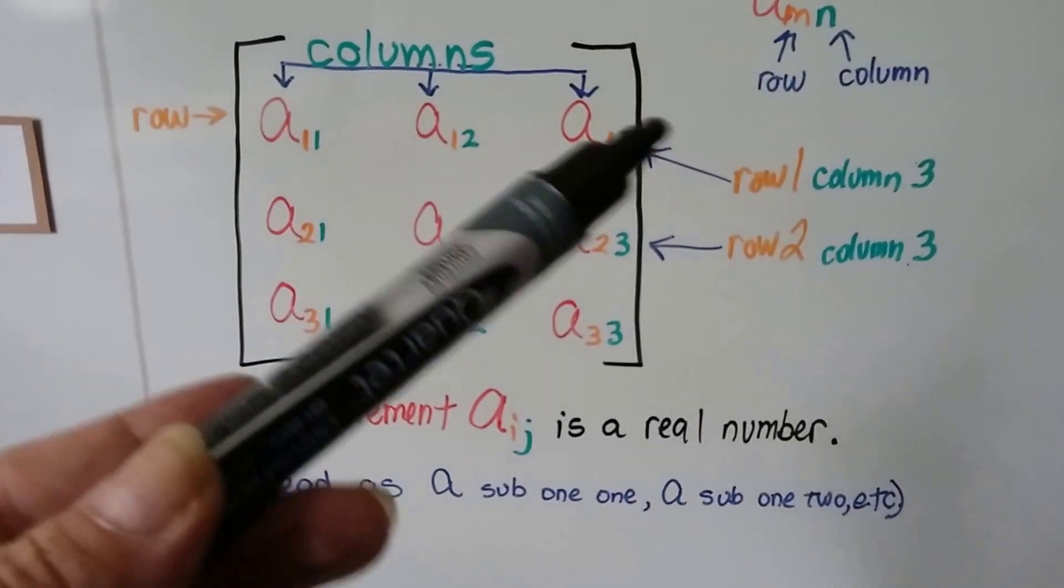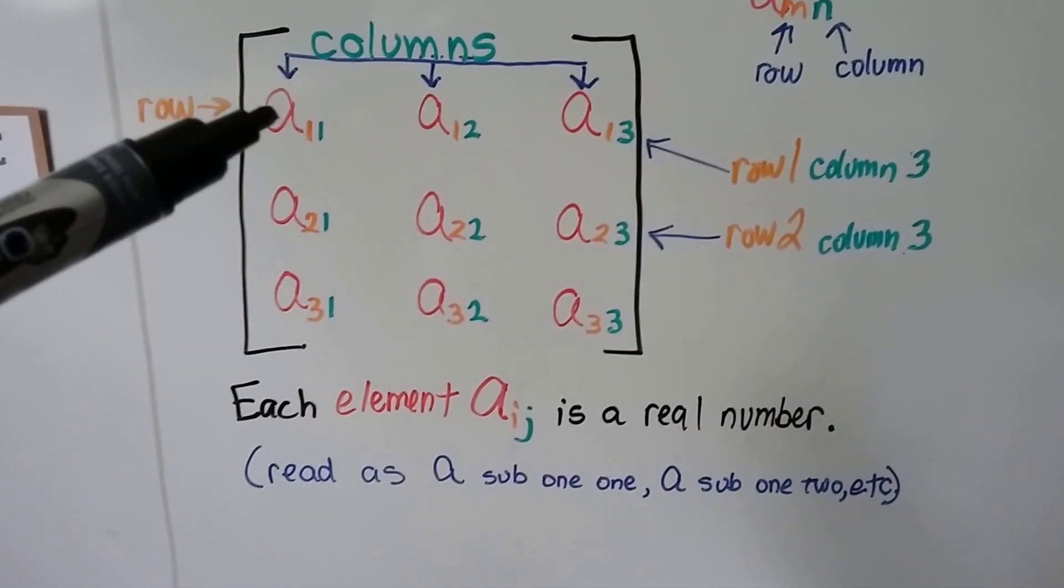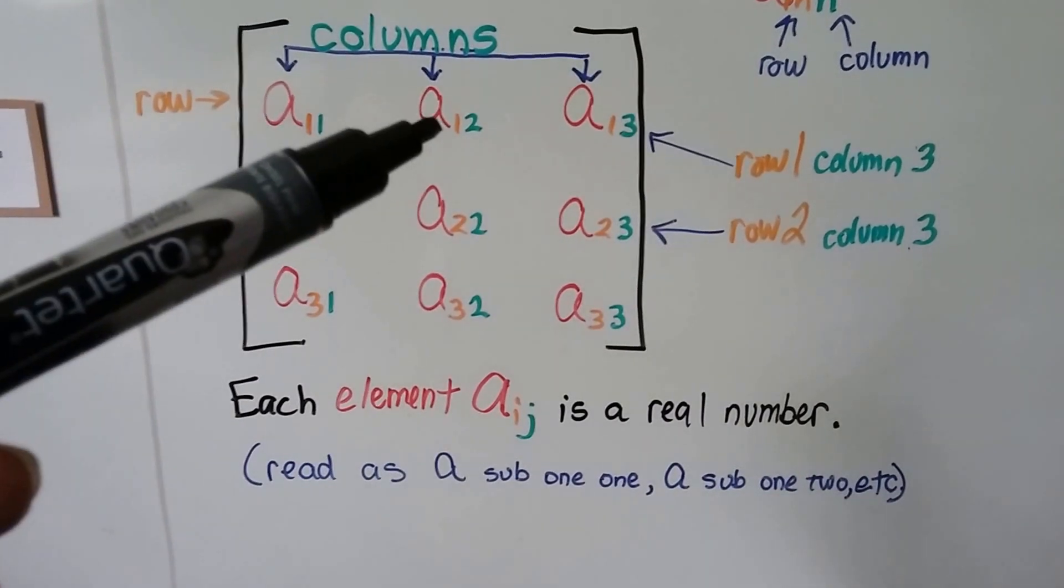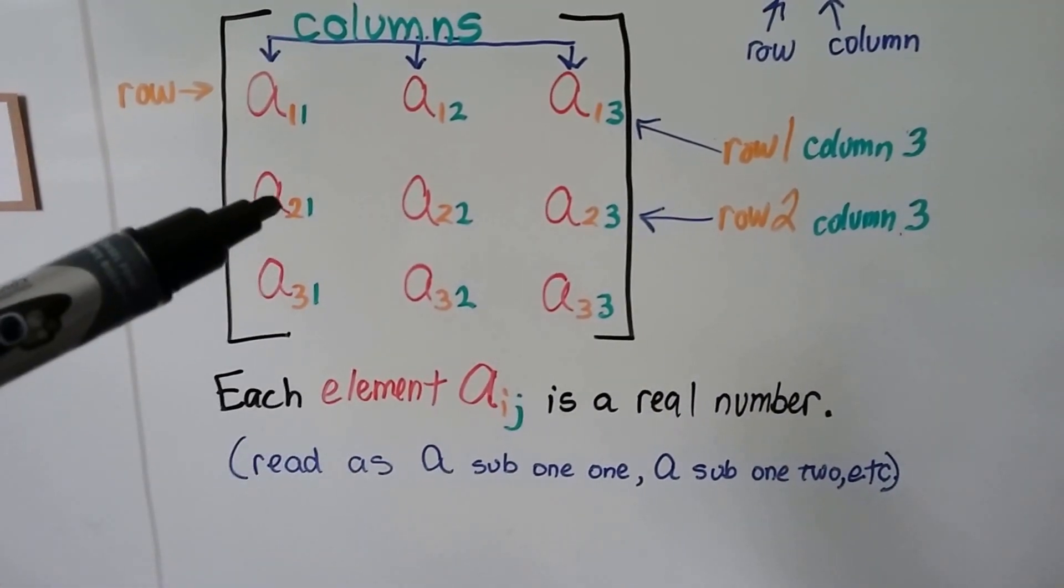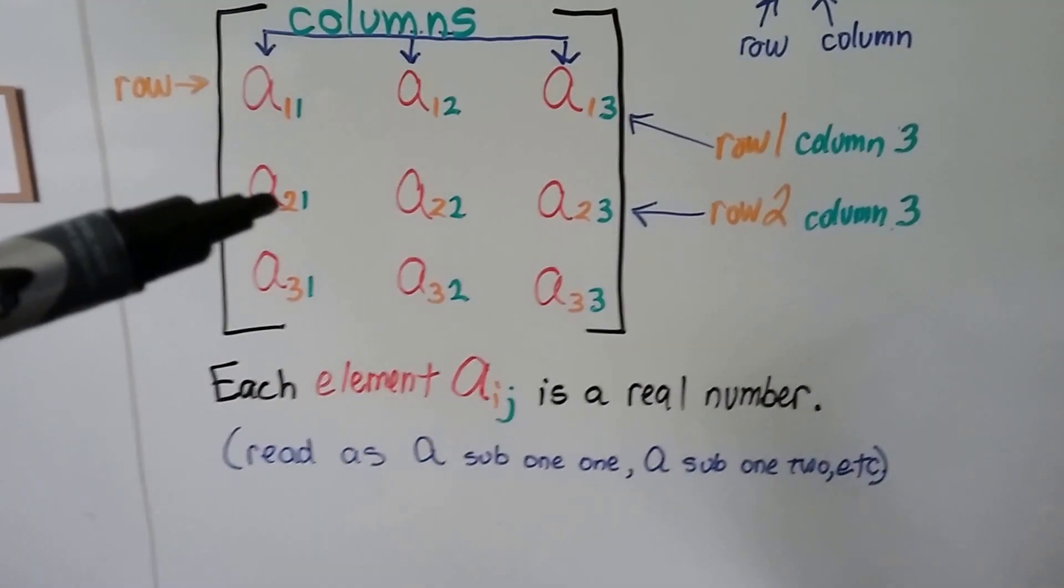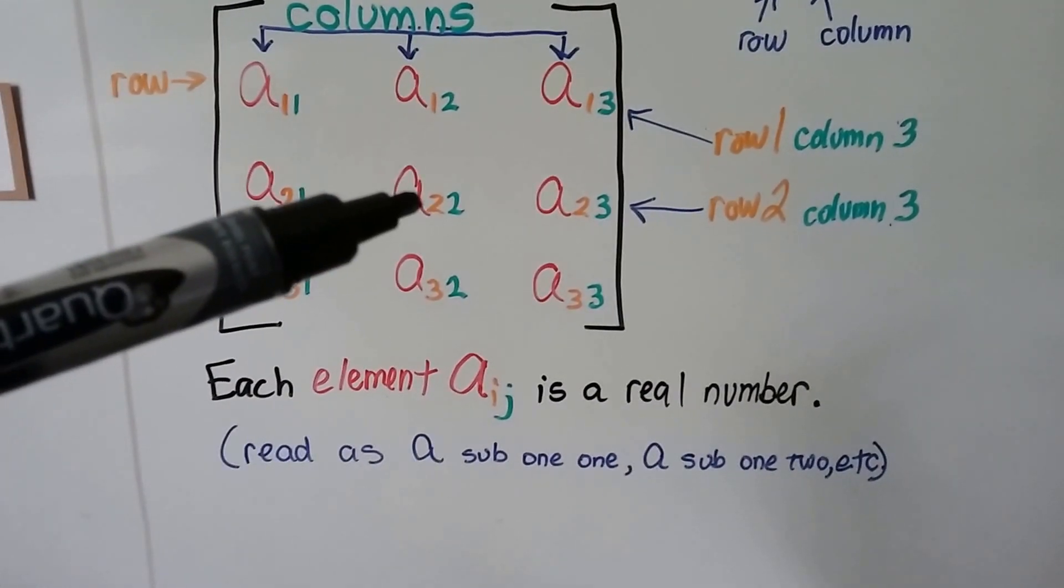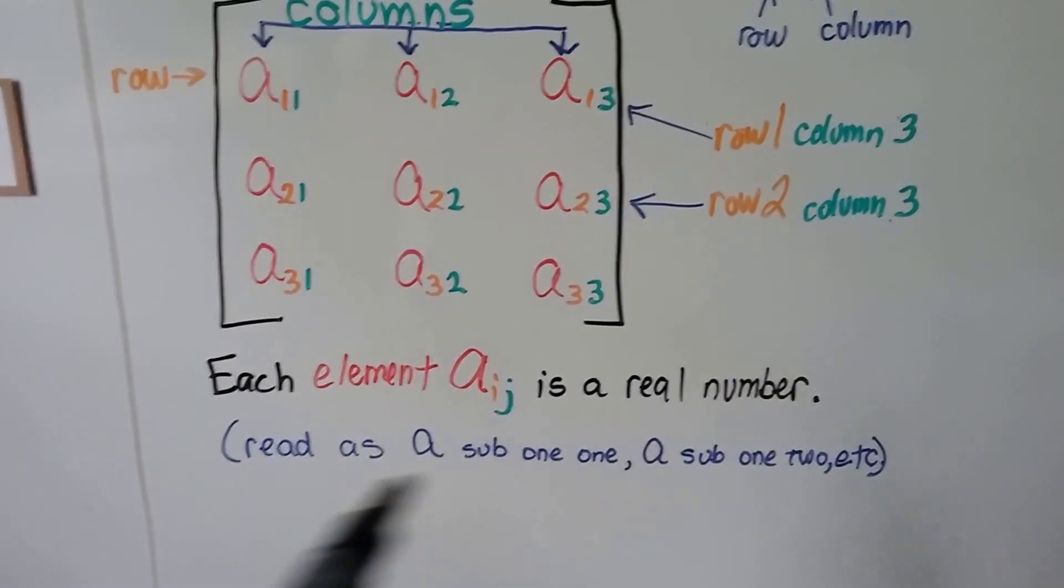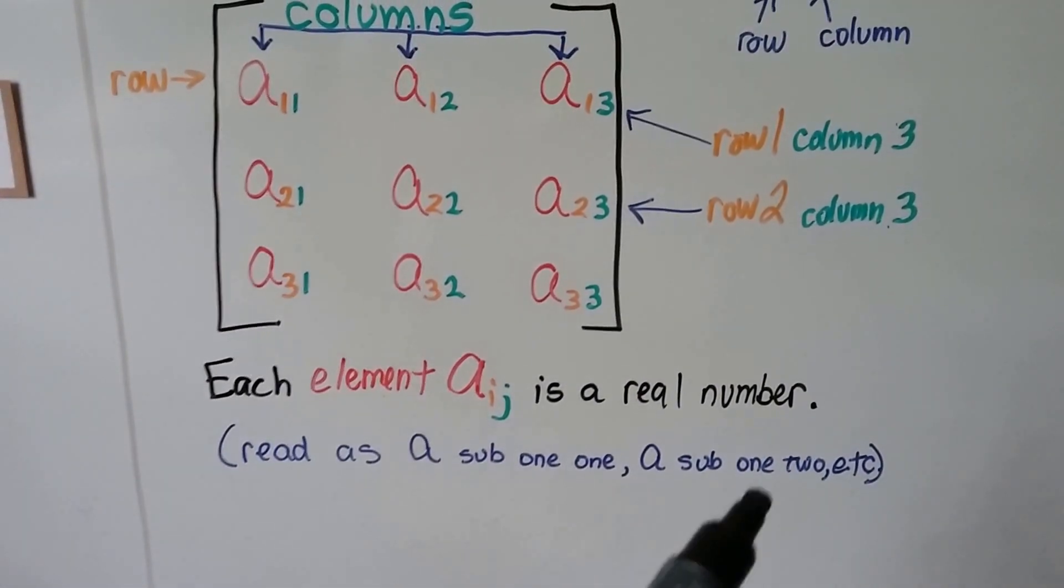It's not 11, 12, 13. It's read as a sub 1, 1, a sub 1, 2, a sub 1, 3, a sub 2, 1, a sub 2, 2. Because it's saying row 2, column 1, row 2, column 2. That's why it's not a 22, it's a 2, 2.